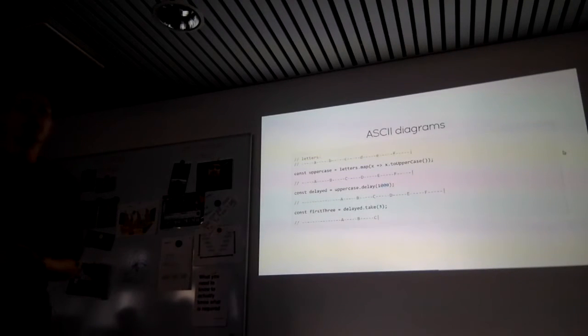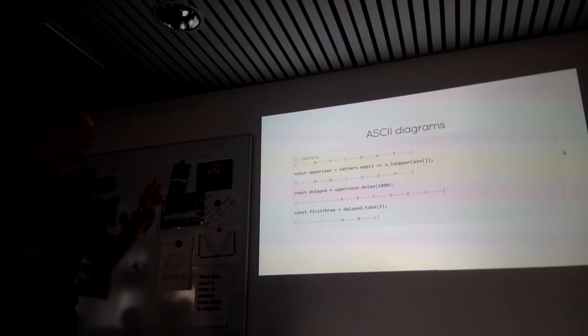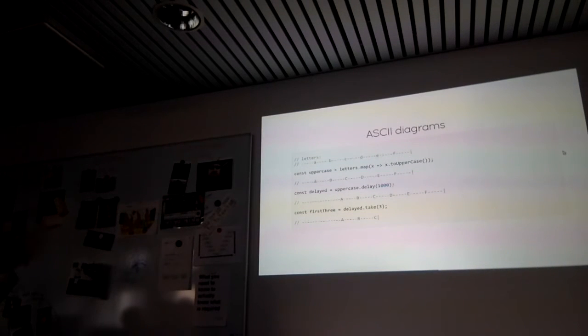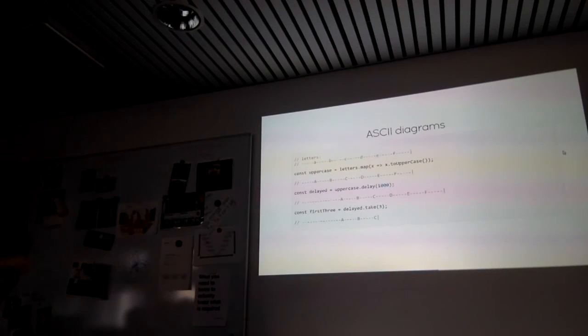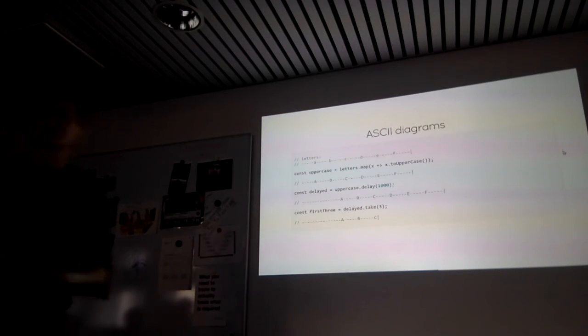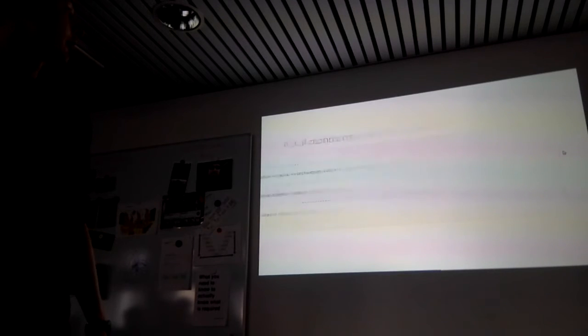Interestingly, the RxJS project has a way of using this ASCII stream representation for unit testing — they have methods that convert the ASCII representation into an actual stream for testing and then compare results. They also automatically generate marble diagrams from the ASCII representation for documentation. There's also an API in progress for user-land unit tests using the ASCII representation, which looks really interesting.